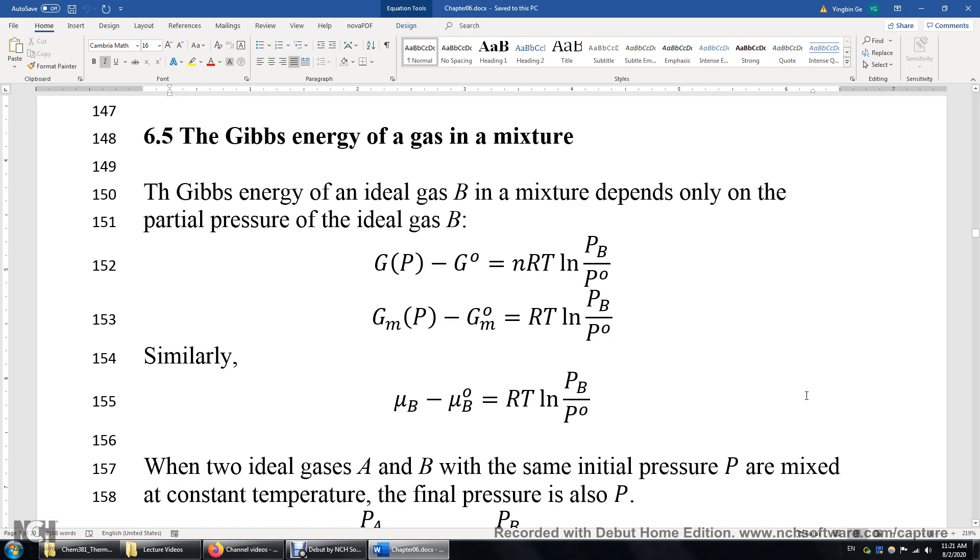Section 6.5, the Gibbs energy of a gas in a mixture. How do we calculate the Gibbs energy of a gas in a mixture? Let's say we have an ideal gas B and if we know the standard Gibbs energy of B, well then it's very simple.